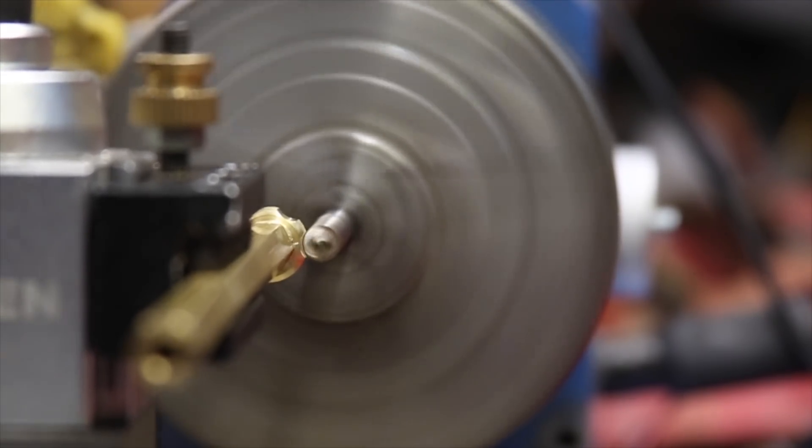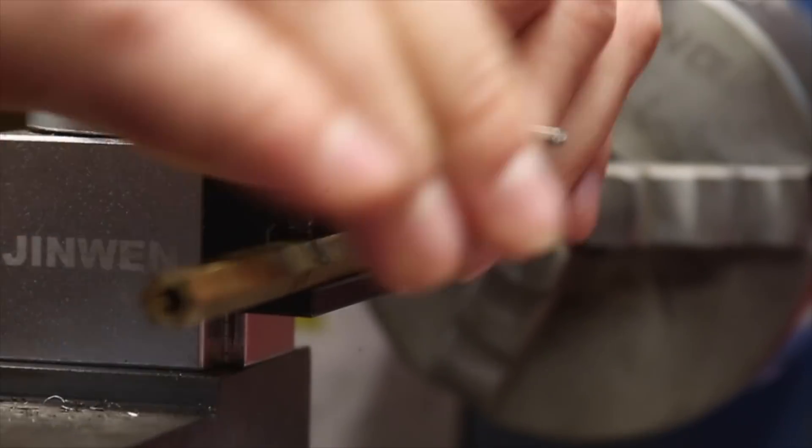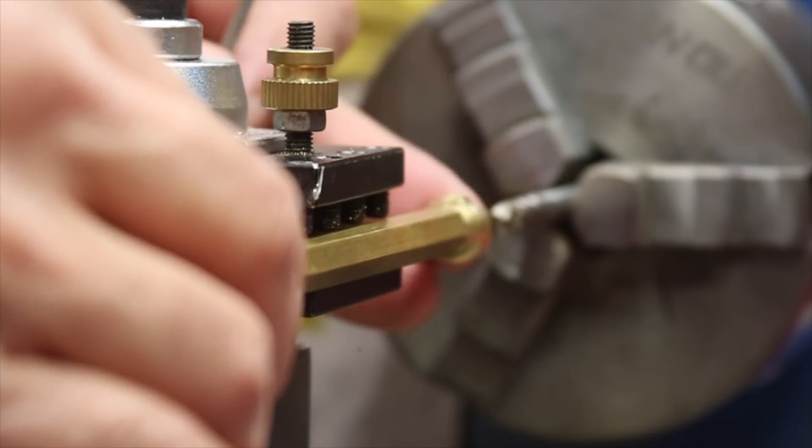Unless something is moved or loose, the hex stock should provide six perfectly indexed cuts to the head of the thumb screw.